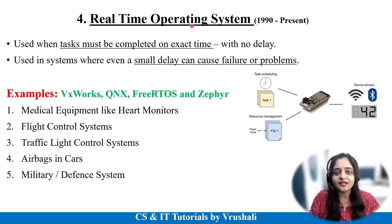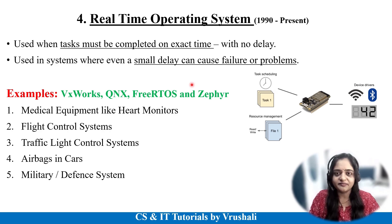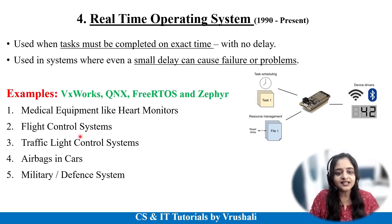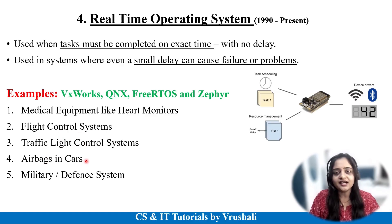The next type is real time operating system, invented in 1990 and used to this day. The main concept is that it delivers results at an exact time. For example, in medical equipment like a heart monitor — the heart monitor gives the result for a particular patient on time, and even a small delay can cause problems or failure. This is the reason for real time OS: they predict and provide data in real time. This concept is mainly used in military and defense systems to track unauthorized and uncontrolled data, and also in flight control systems, traffic light control systems, and airbags in cars. OSes like VxWorks and QNX implement this real time operating system concept.